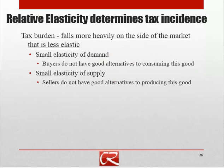To repeat: relative elasticity determines tax incidence, and the tax burden falls more heavily on the side of the market that is less elastic. The intuition is that when someone has inelastic supply or demand, that means they're not price sensitive — they're going to go through with their transaction more or less without regard to price. So when the tax is established, it opens up renegotiations between buyers and sellers, and someone who's not going to walk away doesn't have much bargaining power. The people committed to going through with the transaction regardless of price are going to get the short end of the stick when it comes to bearing the burden of the tax.